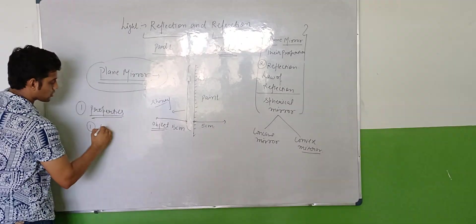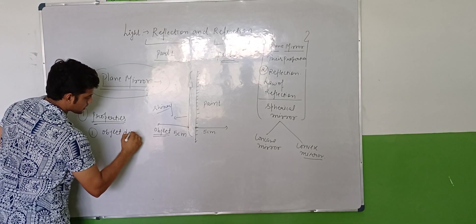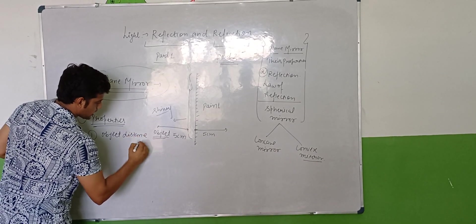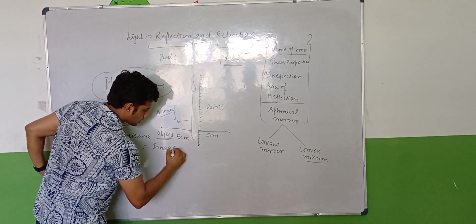The first property is: object distance is equal to the image distance.